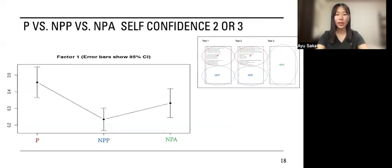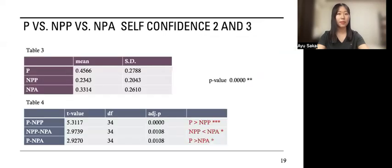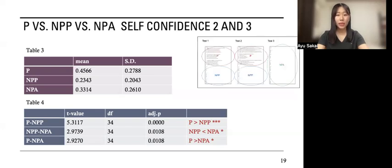Next, to omit answers that learners answered correctly by chance, I analyzed the answers which learners had confidence. Here is the graph. Table 3 shows the means and standard deviation for the listening comprehension scores of answers which learners have confidence. As revealed in Table 3, the results confirm that P achieved the highest score followed by NPA, and NPP scored the lowest. Table 4 also shows that there was significant difference among three formats.